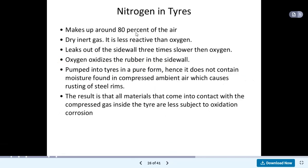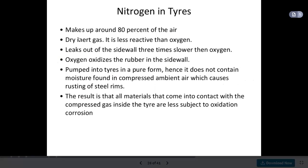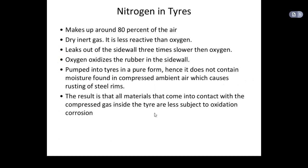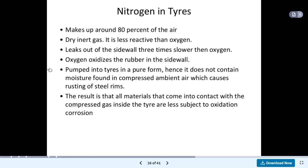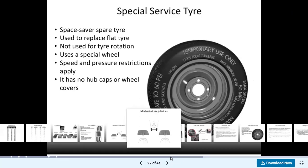Different types of tyres are available, like nitrogen tyres. Nitrogen makes up around 80% of the air and is a dry inert gas — it is less reactive than oxygen, so different features are available in nitrogen tyres. Special service tyres are also available.